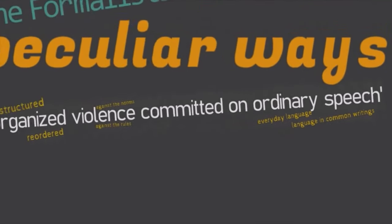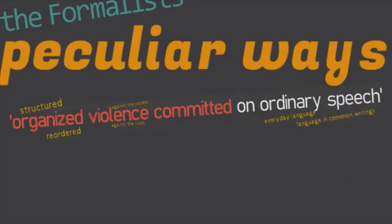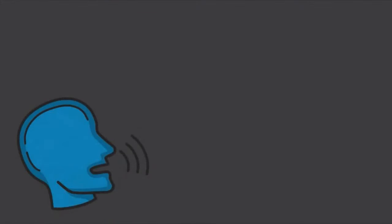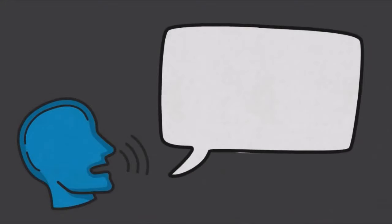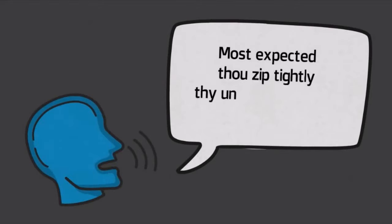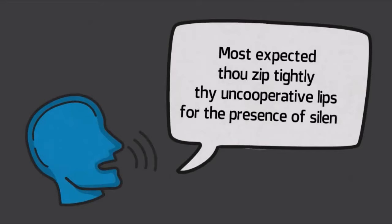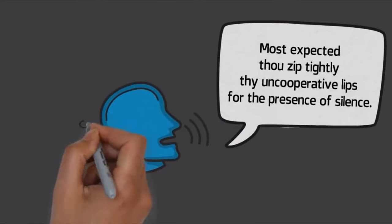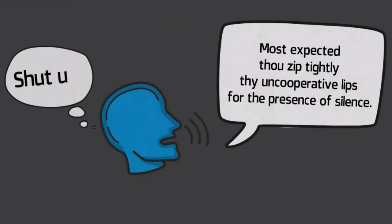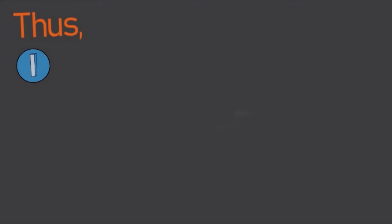In simpler terms, 'organized violence committed on ordinary speech' means literature uses language that is structurally employed against rules or norms. For example, imagine someone saying: 'Most expected though, zip tightly die uncooperative lips for the presence of silence.' That's so uncommon — the person actually just means 'shut up.' This long utterance is seldom found in daily communication but rather in literary writing, and people need to think it over to interpret the meaning.